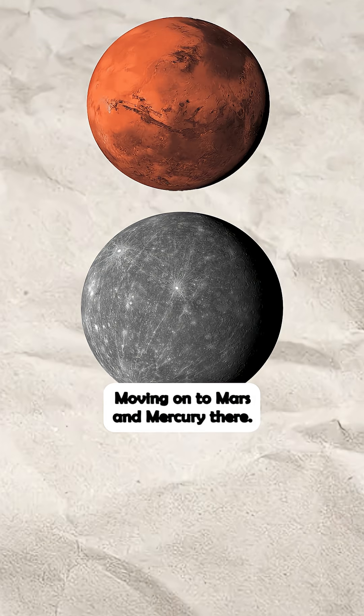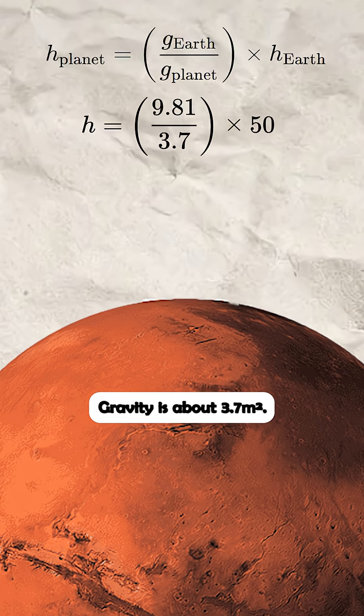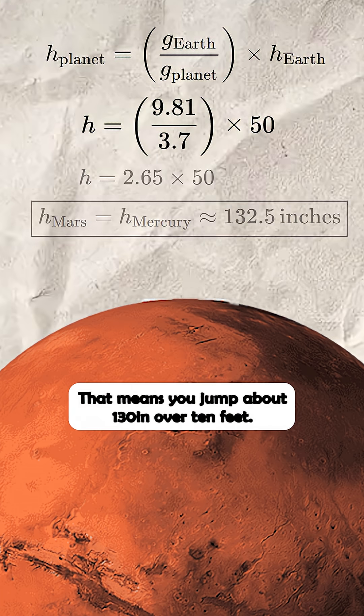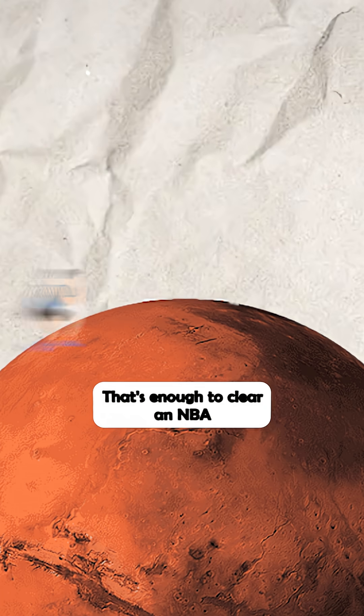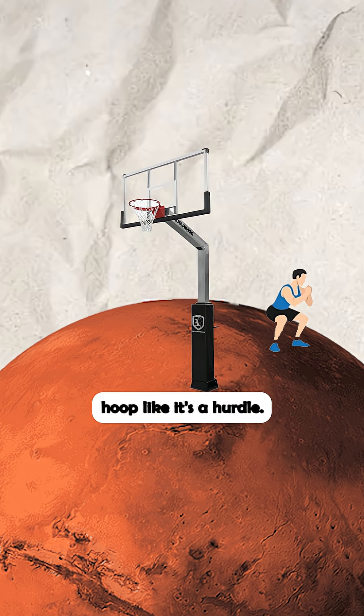Moving on to Mars and Mercury, their gravity is about 3.7 meters squared. That means you jump about 130 inches over 10 feet. That's enough to clear an NBA hoop like it's a hurdle.